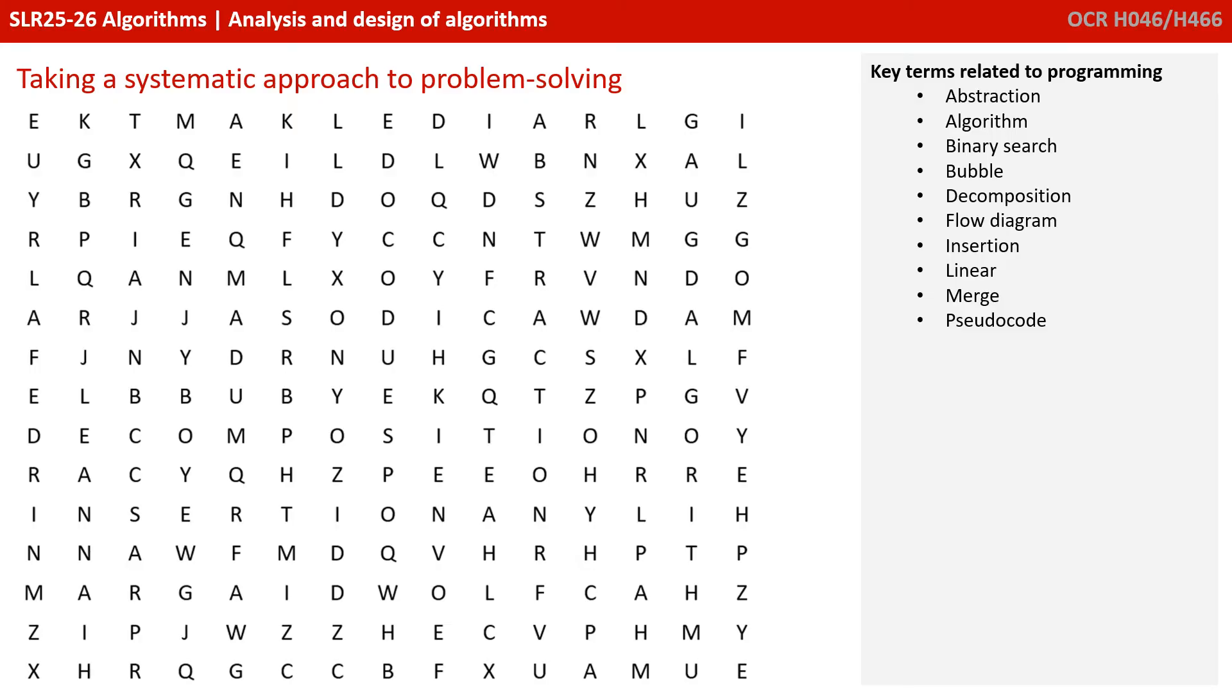When you try to solve a word search, what you could do is just randomly look around the grid of letters for one of the words. But this is probably not the most successful approach. What you want to do is first identify which words you're going to be looking for. So breaking the problem down, if we're just looking for the word algorithm, we could then just again randomly look around the grid for the word algorithm, but we're unlikely to find it quickly.